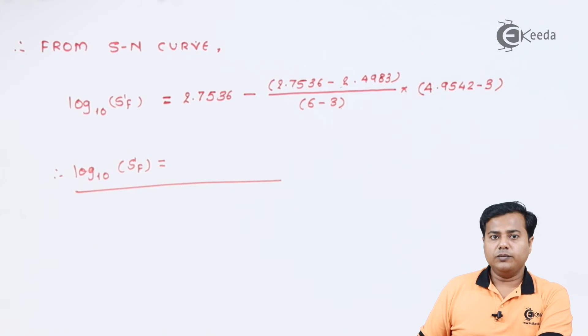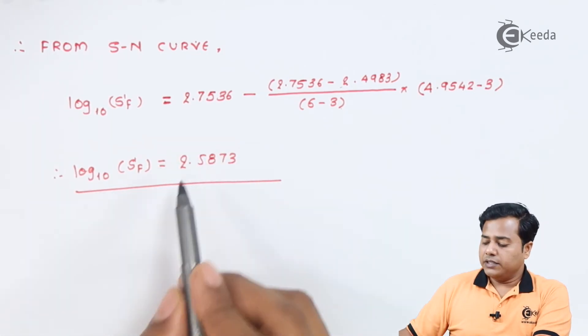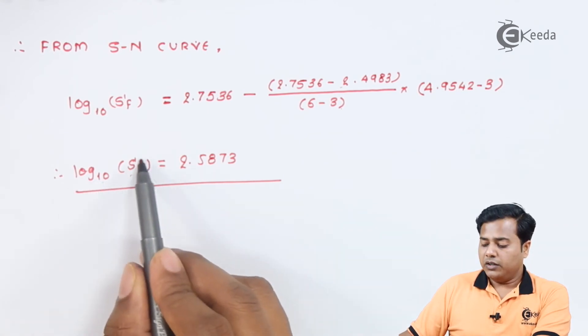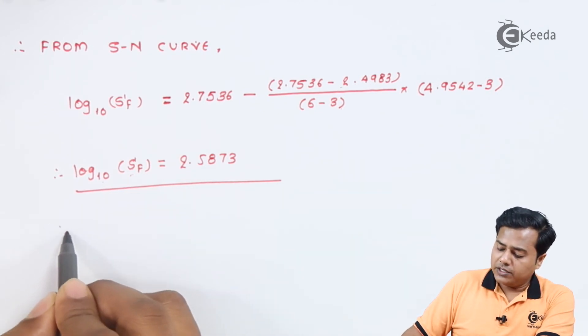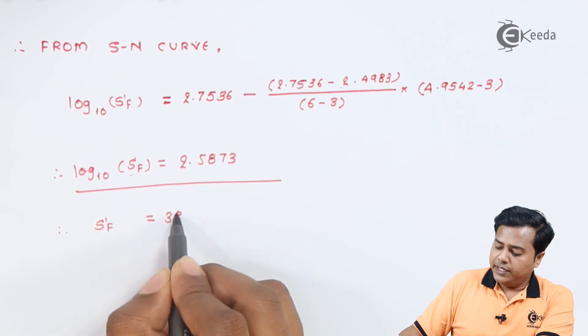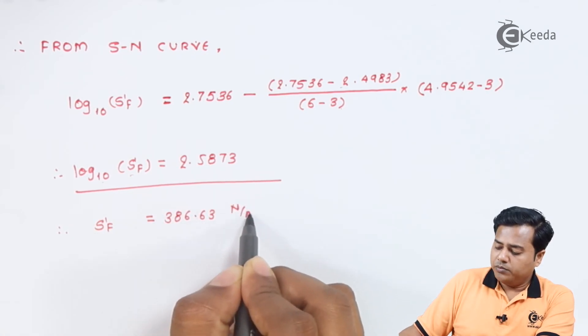After solving and evaluating this expression, we will get the strength expected somewhere equal to 2.5873. Now surprisingly, this value actually represents a logarithm to the base 10 of the strength. So after taking the anti-log function, we will get the strength somewhere equal to 386.63 newton per millimeter square.